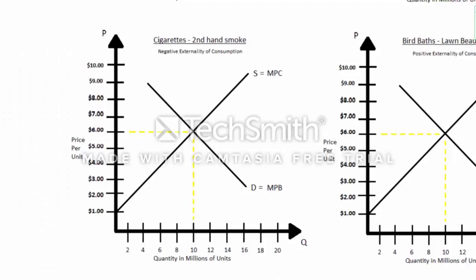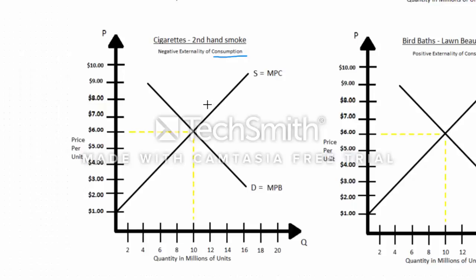In general, we can think of the supply and demand curves as marginal cost and marginal benefit. When we're not talking about externalities, the marginal cost and marginal benefit to the private individuals is the same as the marginal cost and marginal benefit to society as a whole. But when we get to externalities, that's the distinction. Here we're talking about a negative externality of consumption. Because we're talking about consumption, there's an externality — either costs are going up or benefits are going down. It's cigarettes, secondhand smoke.